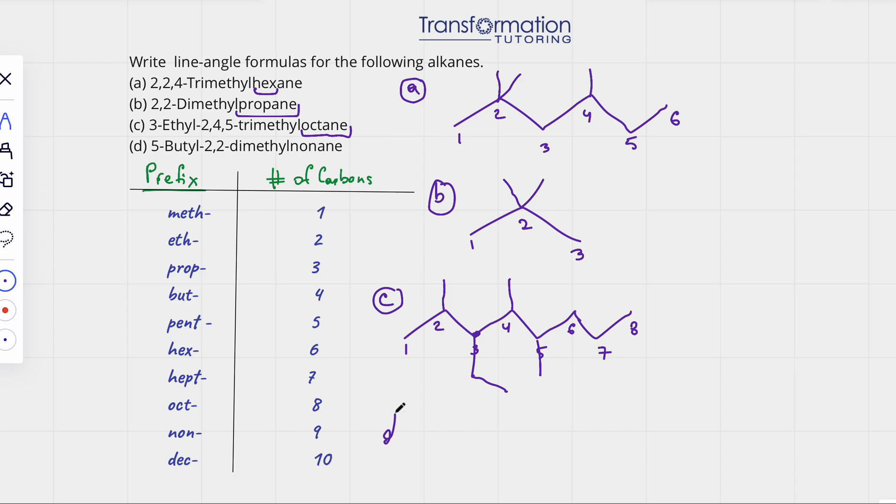Let's go to D. 5-butyl-2,2-dimethylnonane. Nonane is the parent chain. Nonane means 9. So we will start by drawing 9 carbons: 1, 2, 3, 4, 5, 6, 7, 8, 9. And next we are going to number it: 1, 2, 3, 4, 5, 6, 7, 8, 9. This is our parent chain.